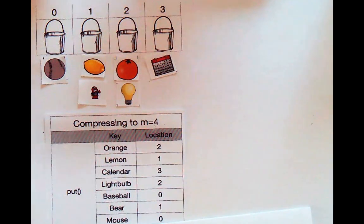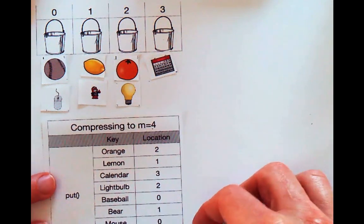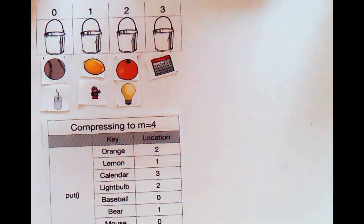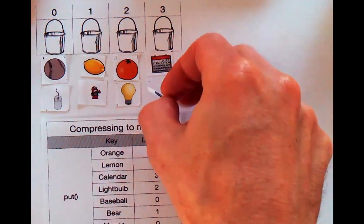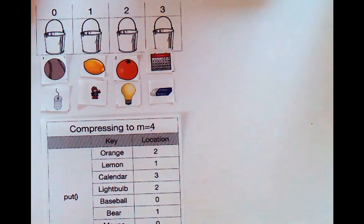Mouse will go in zero, so we'll go through everything in that bucket. And then finally an eraser goes in three. I'm going to stop there. So we've added eight items, and currently they're uniformly distributed across all buckets. Our hash function did a pretty good job of trying to minimize the amount of data in each bucket and uniformly distribute our data.